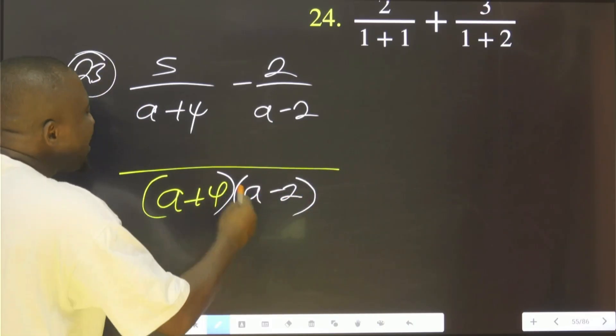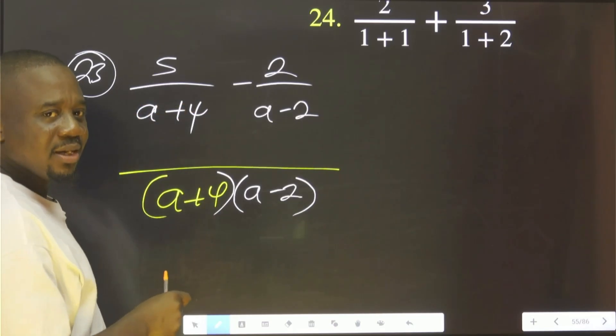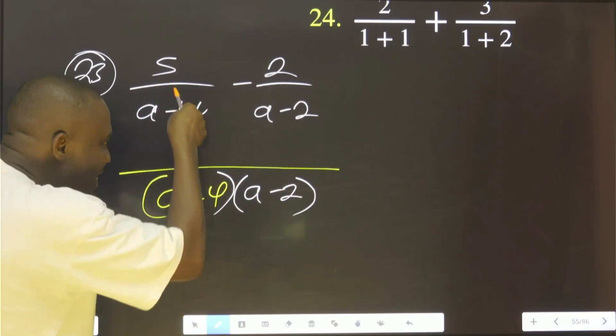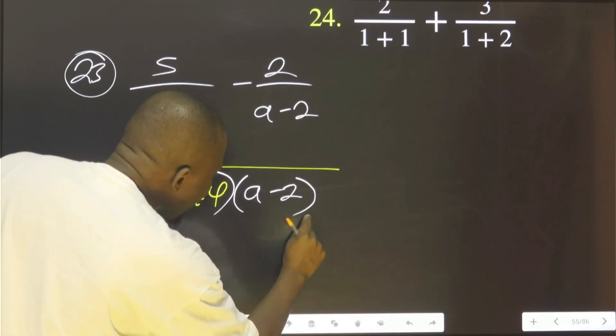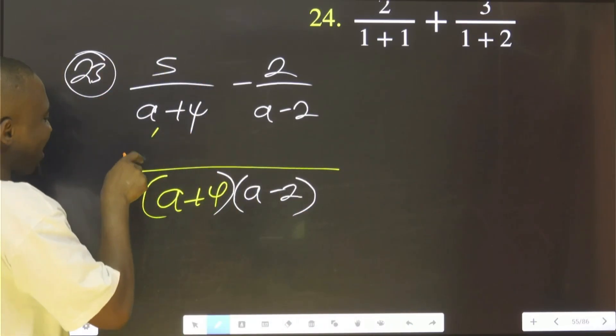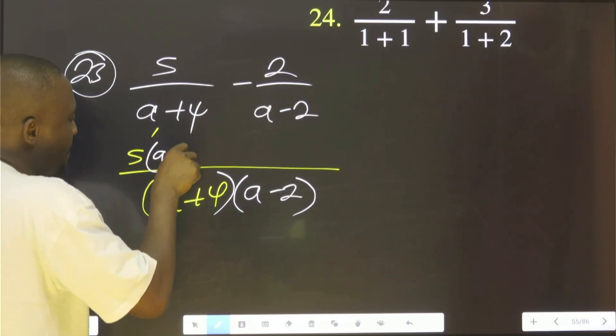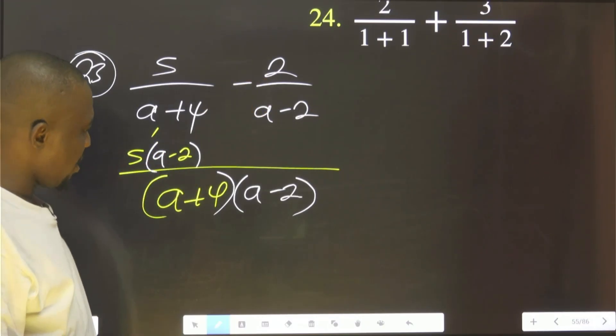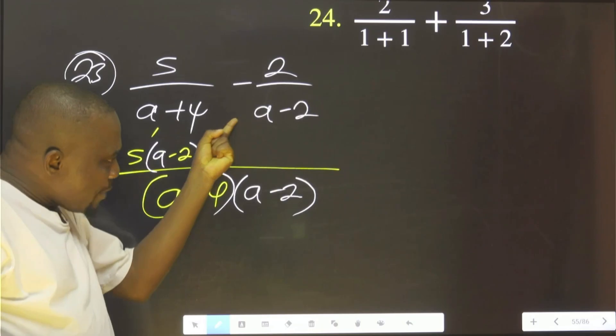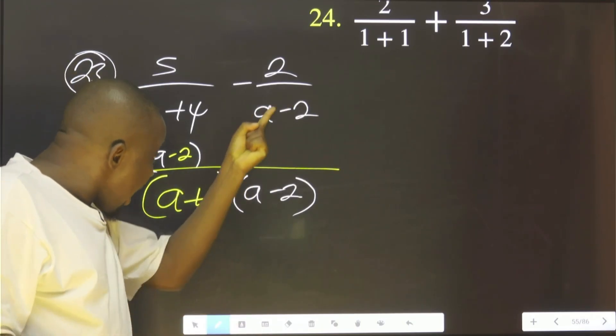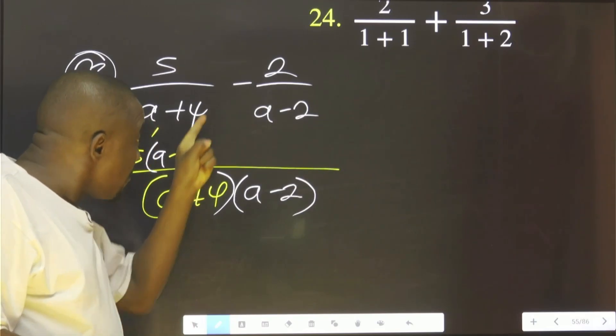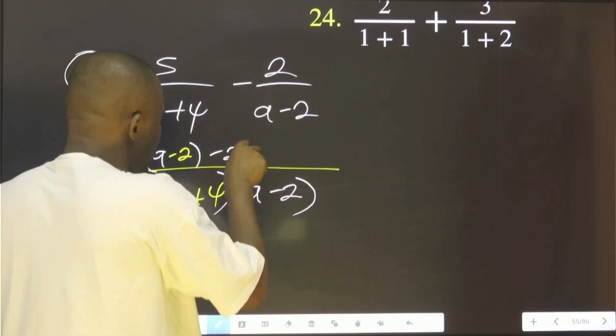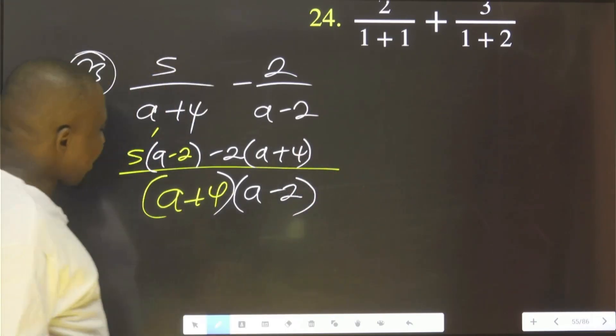Now, everything at the denominator divided by this. So when you divide everything here by this, this will cancel this. Only this will remain. This one that will remain multiplied by 5. That is 5, a minus 2. You come here now. Everything here divided by a minus 2. a minus 2 will strike out a minus 2. The remaining a plus 4 multiplied by 2. That is minus 2, a plus 4.